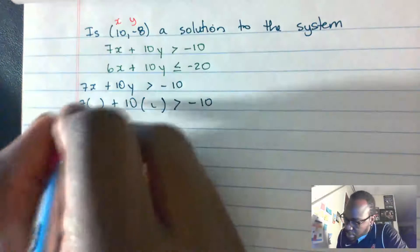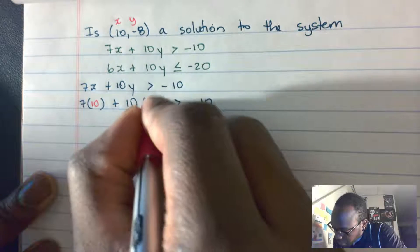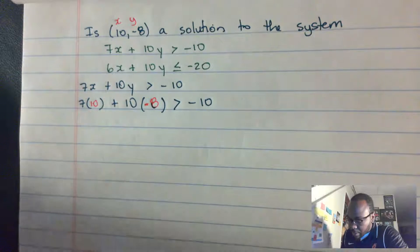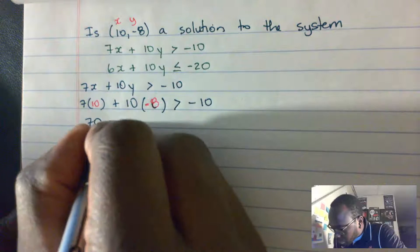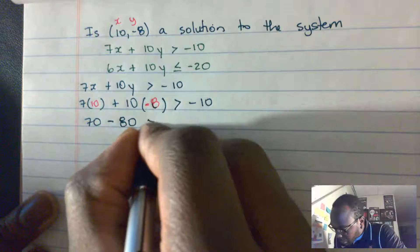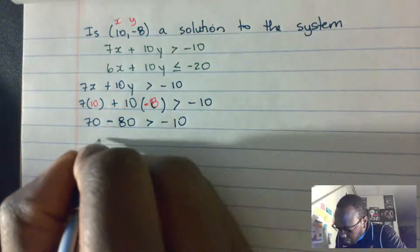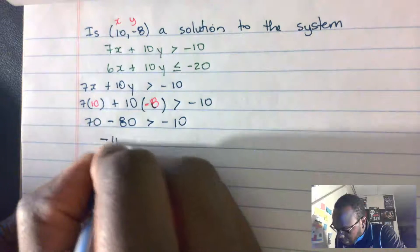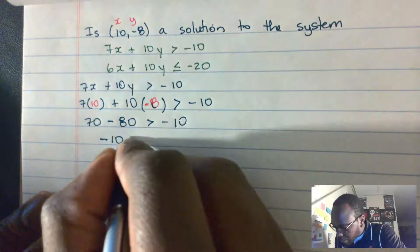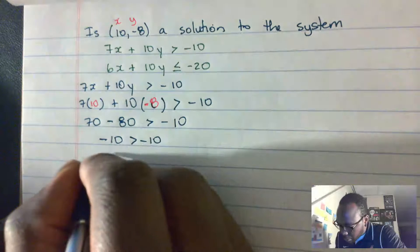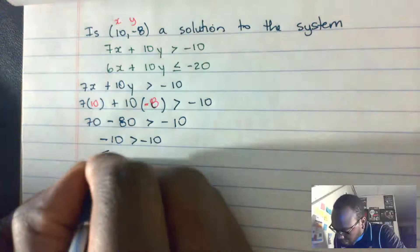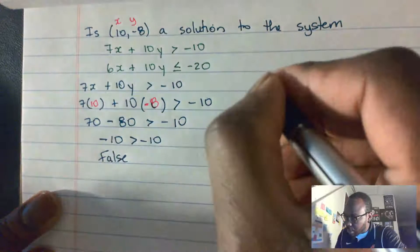We know x is 10 and y is -8. So we have 7 times 10 plus 10 times -8, which gives us 70 minus 80, less than -10. That's -10 < -10. But -10 is not less than -10, so this is false.